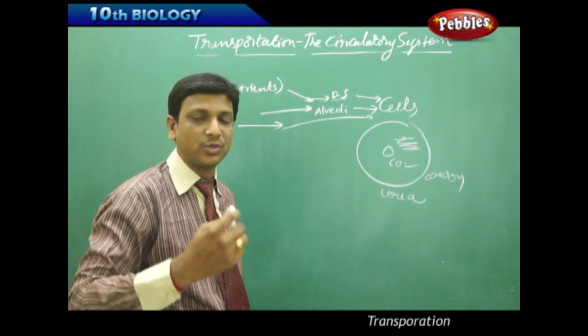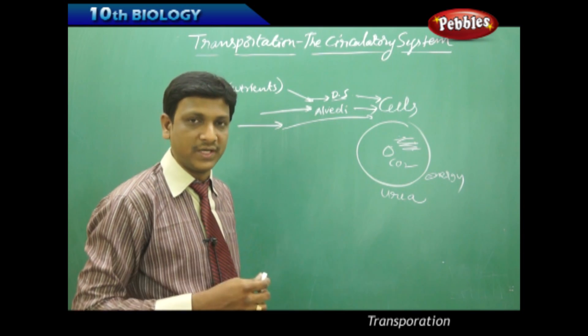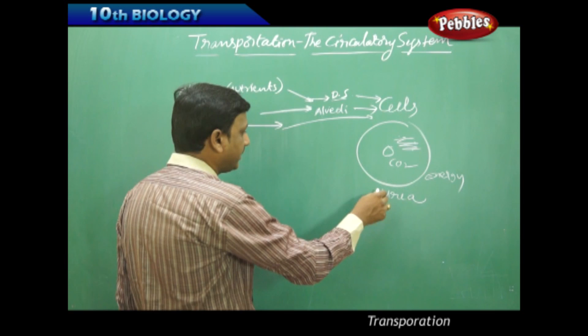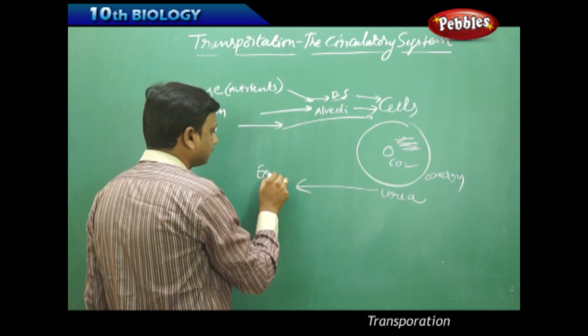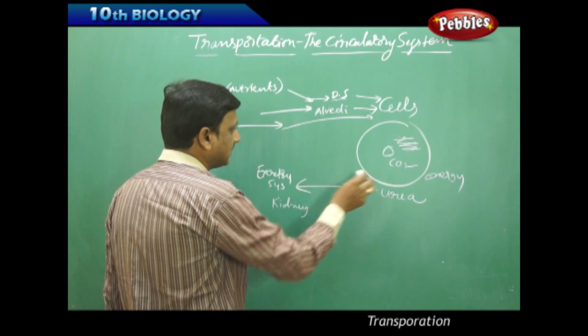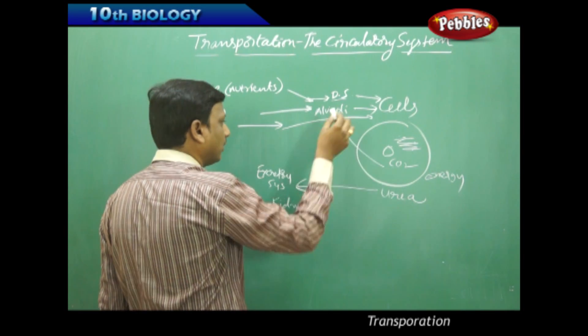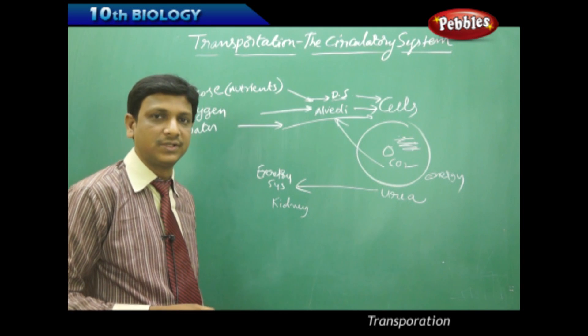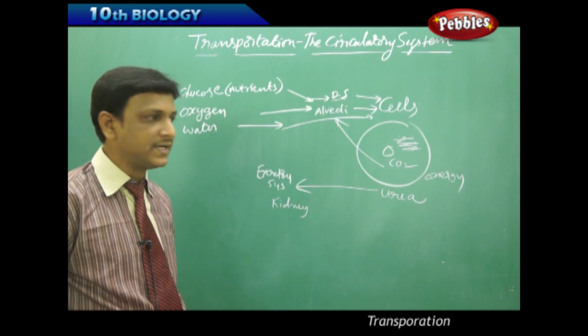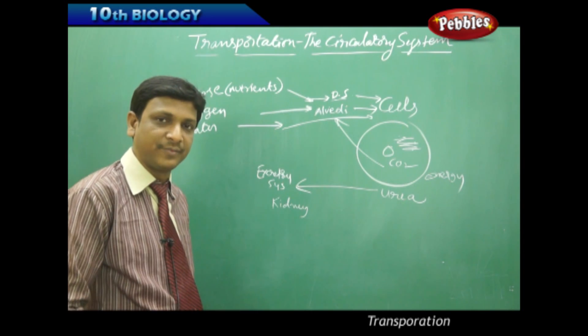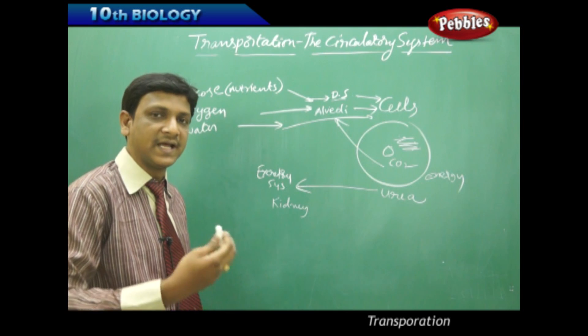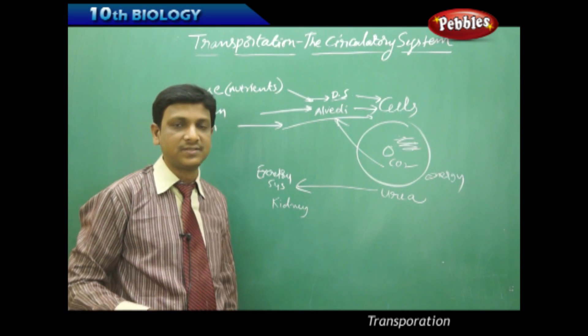So these materials are to be sent out of the cell, sent out of our body. They are to be taken to the excretory system. This urea is to be taken to our excretory system. What does this include? Kidneys. And this carbon dioxide is to be sent back to alveoli for sending it out. Urea has to be sent out of the body. Who can send it out? Urea can be sent out by kidneys, but kidneys are at a separate place. Urea is produced in all the cells of our body. So this urea is to be carried to the kidneys through the circulatory system.